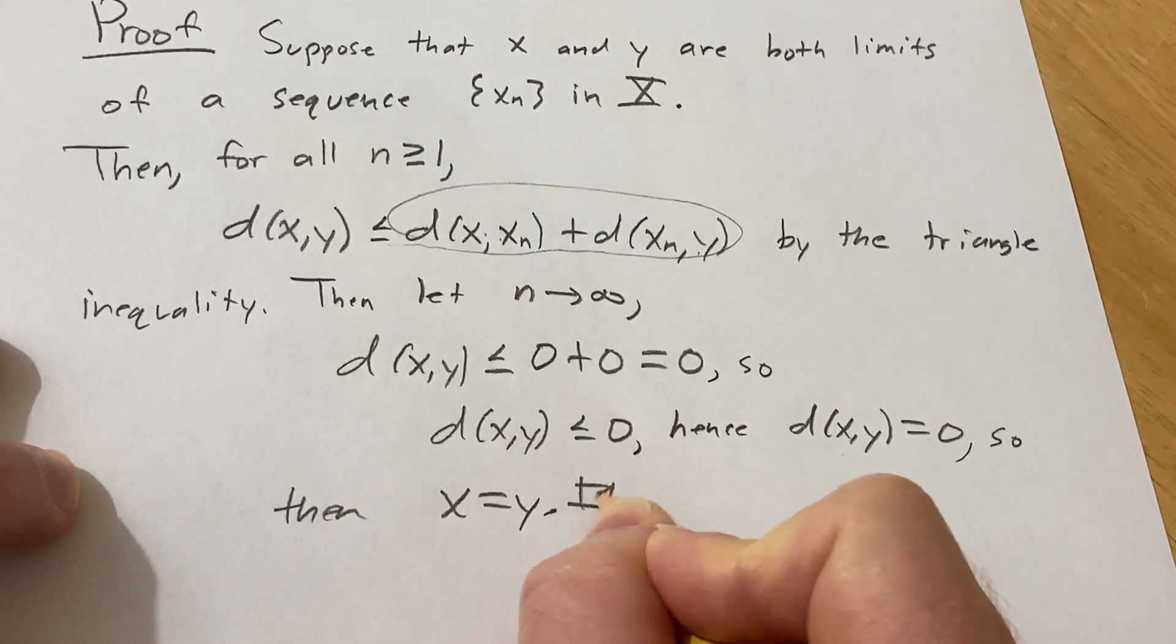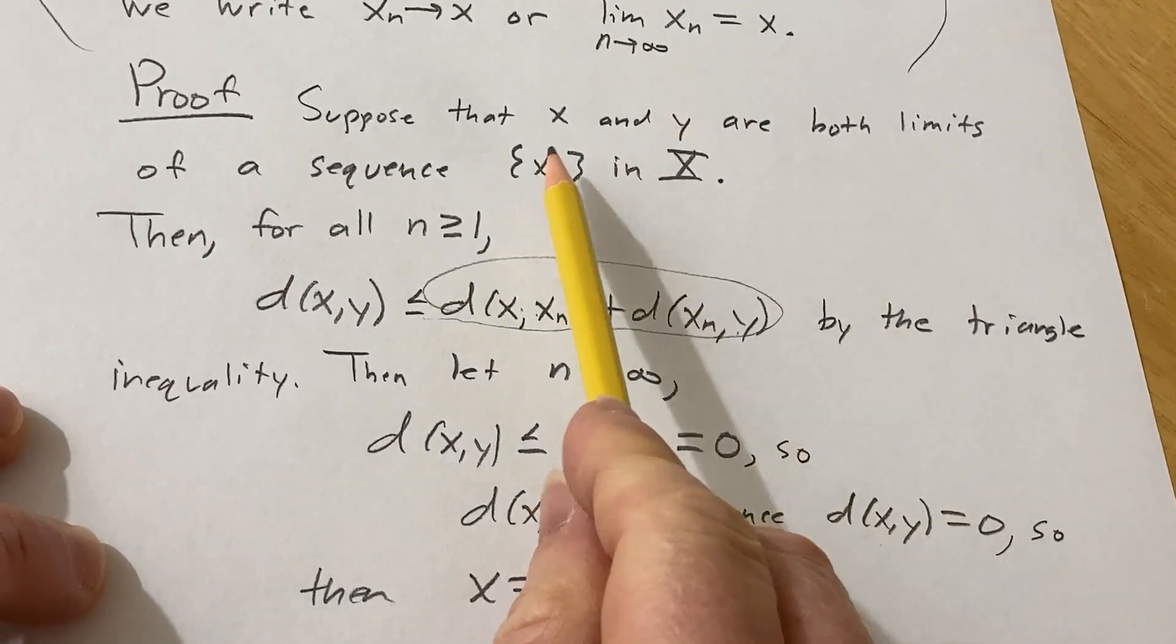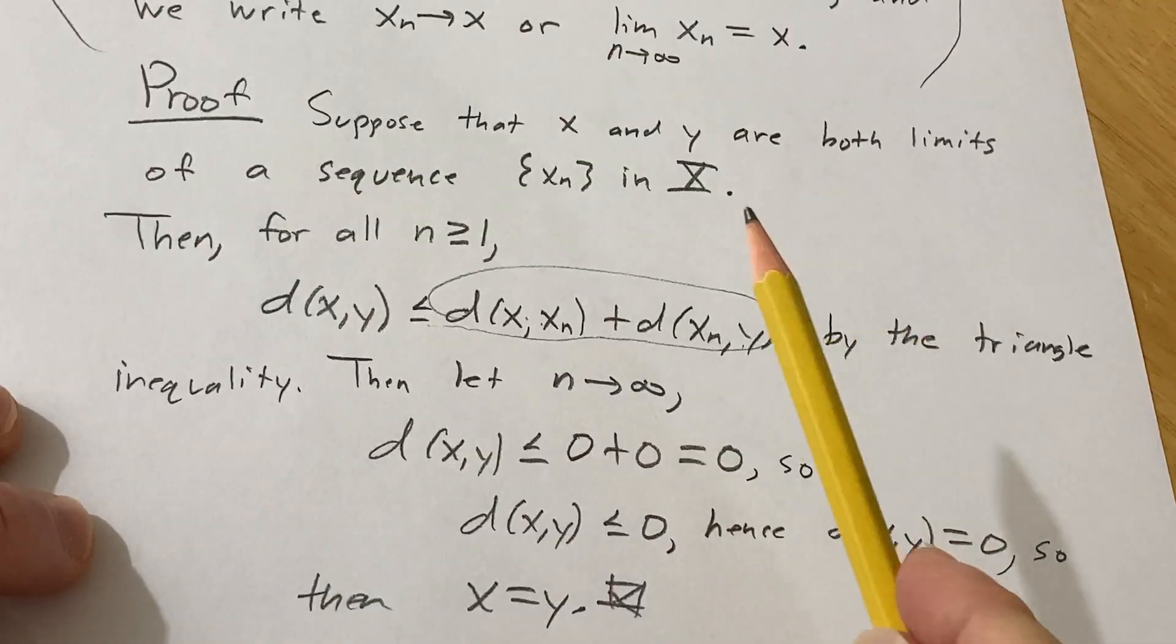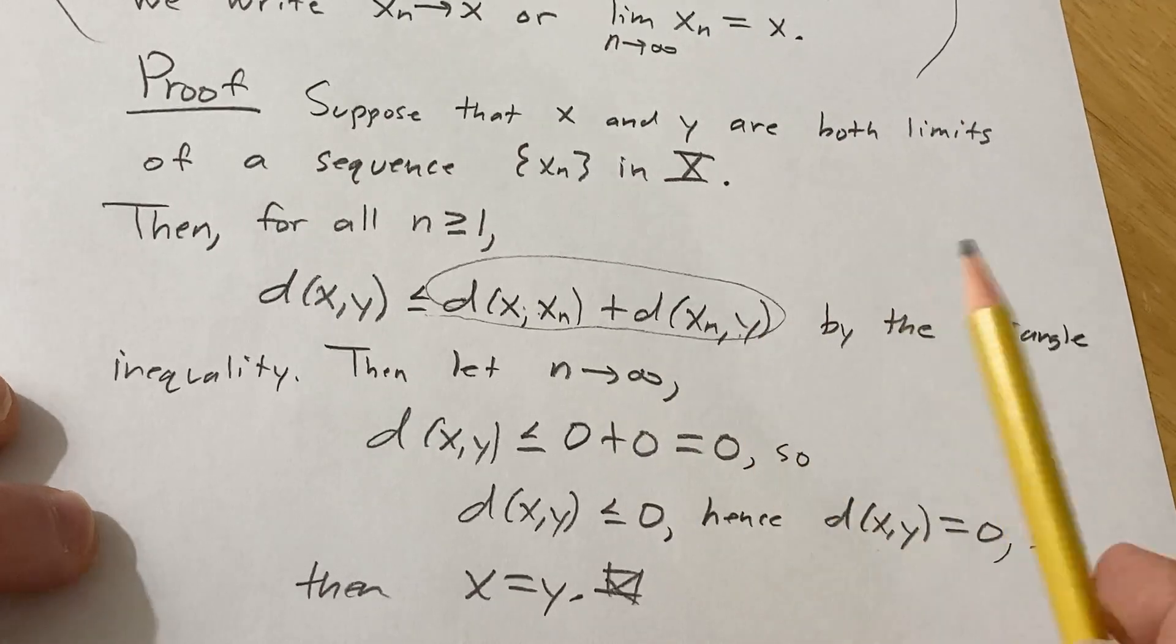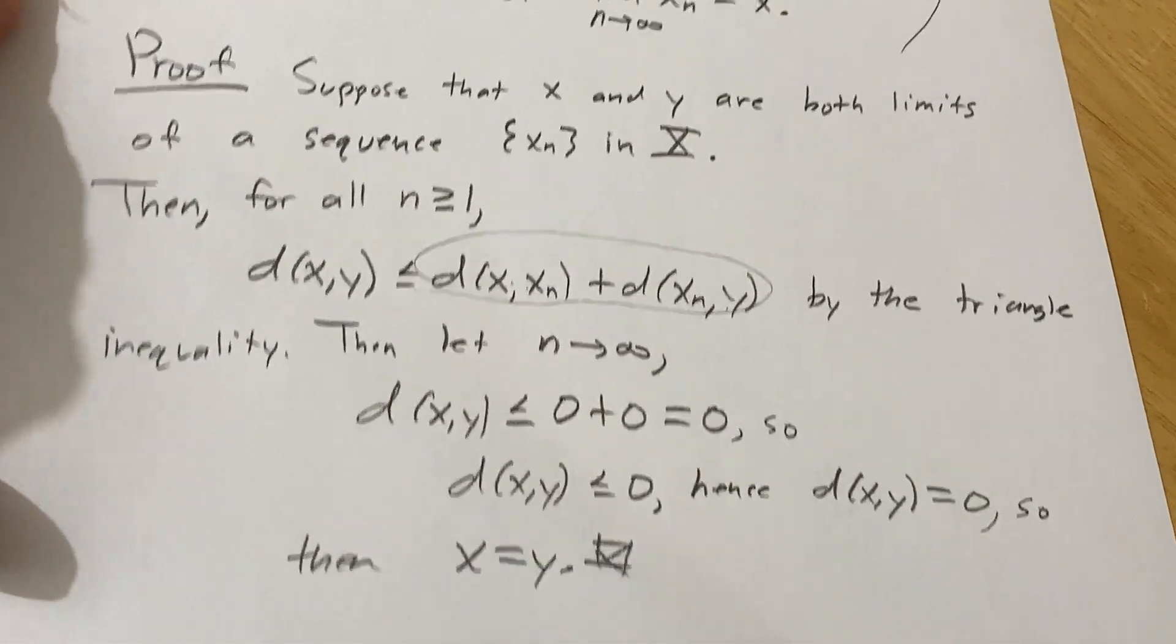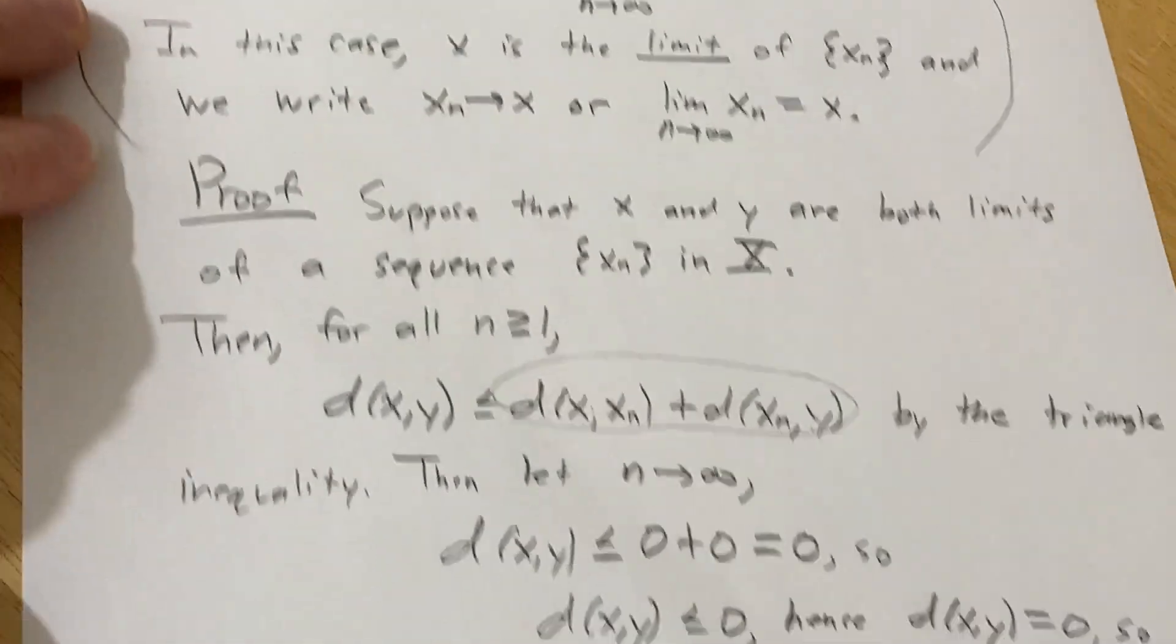And that completes the proof because we took two limits for a sequence and we showed that they must be the same, therefore the limit of a convergent sequence in a metric space must be unique. I hope this video has been helpful to someone who is studying this beautiful subject. Good luck.